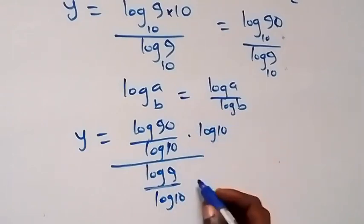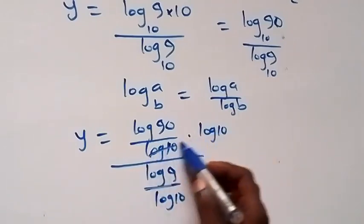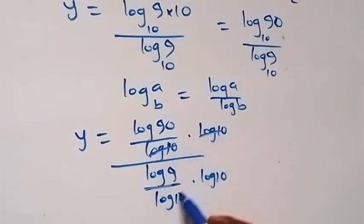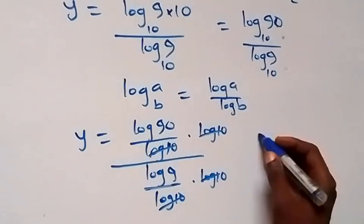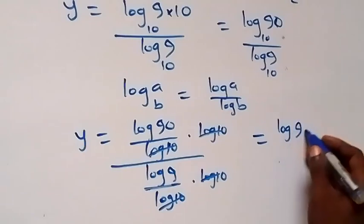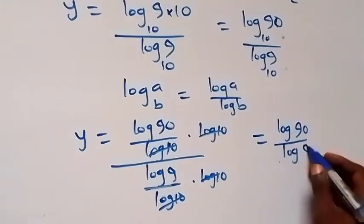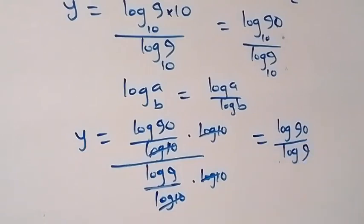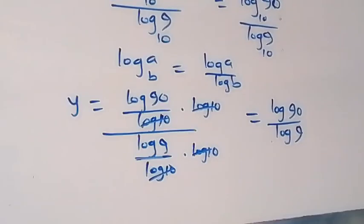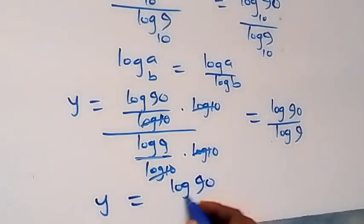From here, the log 10 terms cancel out, and this reduces to log 90 over log 9. Then we have y equals log 90 over log 9.